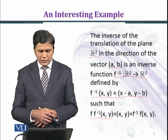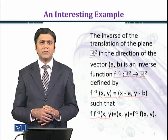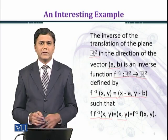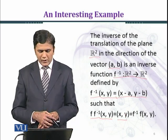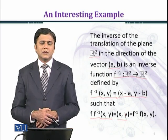And when you take its image under f, you get (x - a + a, y - b + b), which equals (x, y). So f ∘ f^{-1} gives us the identity element.